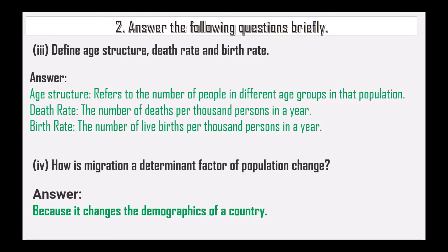Define age structure, death rate and birth rate. Age structure refers to the number of people in different age groups in a population — for example, children, adults, and senior citizens. The count of people across these age groups is what we call age structure.